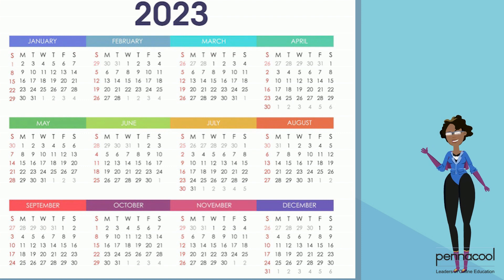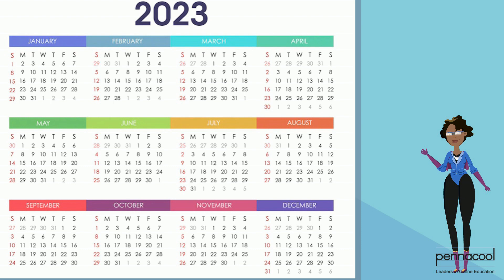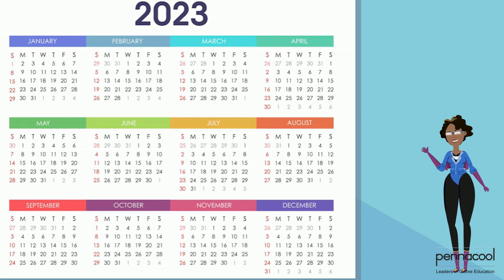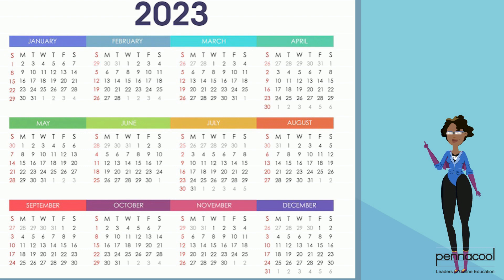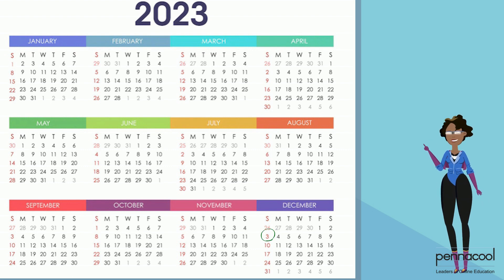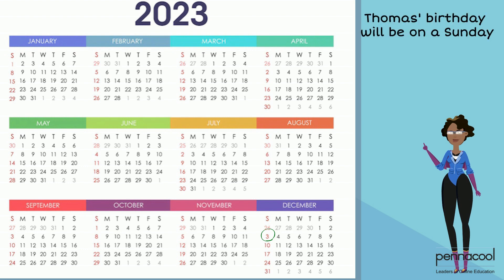Now that we understand how a calendar works, let's see if we can help Thomas plan his birthday party. Thomas's birthday is on the 3rd of December. Can you use the calendar to determine what day Thomas's birthday will be on next year? Let's find the month first, which is December. Then let's look inside December's dates to find the number 3. Once you find the number 3, you can read off the day of the week. Thomas's birthday will be on a Sunday.